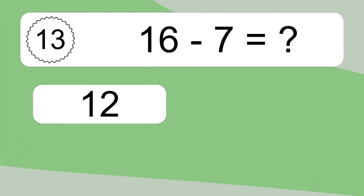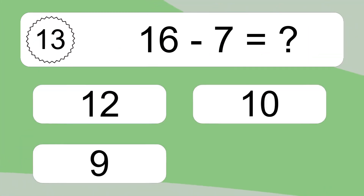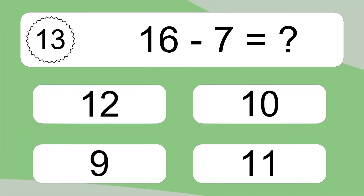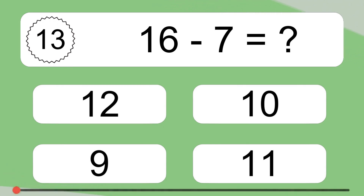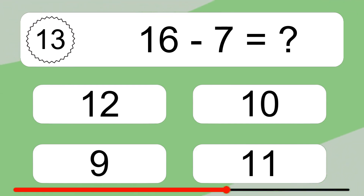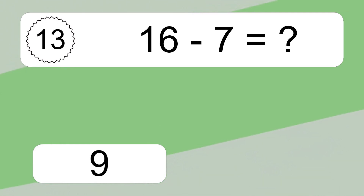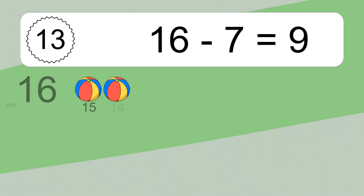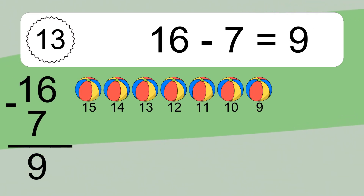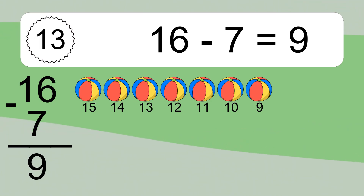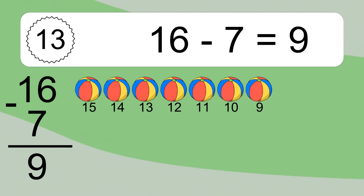16 minus 7 equals what? 16 minus 7 equals 9. Let's count it: 15, 14, 13, 12, 11, 10, 9.